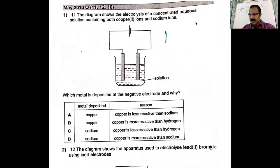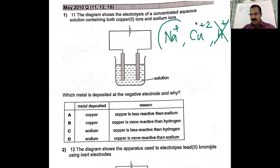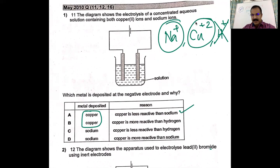According to the question, you have sodium ions and copper ions and they're asking about which metal is deposited. Since it is a solution, it has H⁺ also, but H⁺ doesn't come into the picture because the question is about the positive metal ions. Out of sodium and copper ions, copper ions always undergo reduction. The reason copper is less reactive than sodium is the correct choice. Copper being more reactive than hydrogen is not correct. So the correct answer is A. Sodium can never be deposited.